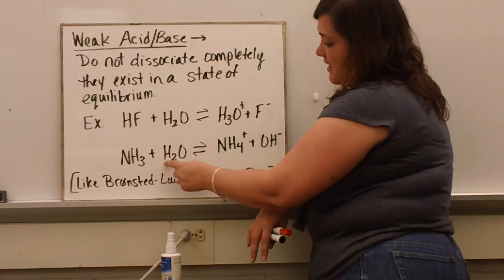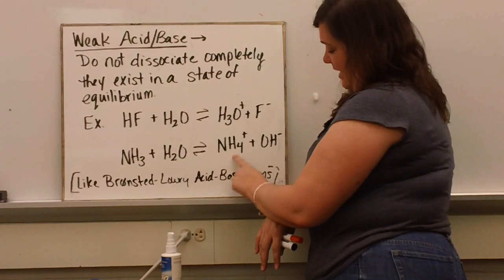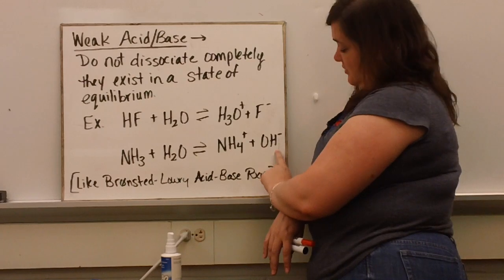A weak base gains a hydrogen from the water, becomes a conjugate acid, and then produces hydroxide.